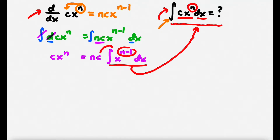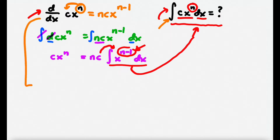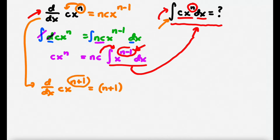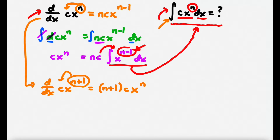I want that exponent to just be n, so I'm going to rig this system to make it spit out x^n. Instead of starting with the derivative of cx^n, I'm going to take the derivative of cx^(n+1). That's basically multiplying by x and then differentiating. Using power rule again, you bring down n+1, giving (n+1)·c·x^n. Now we have the x^n we're looking for. So I'll multiply both sides by dx again.